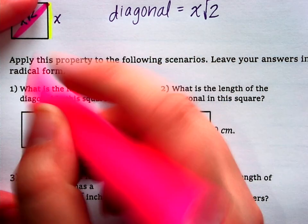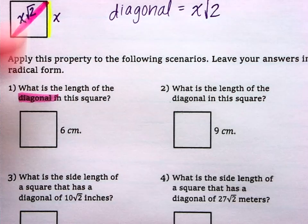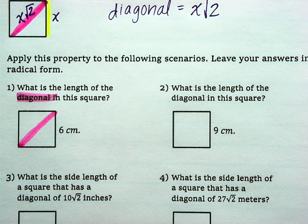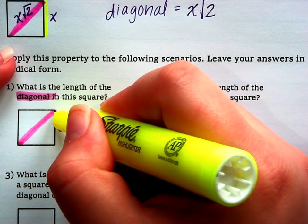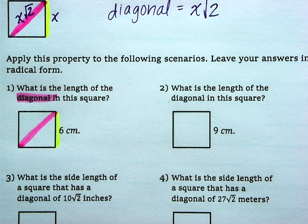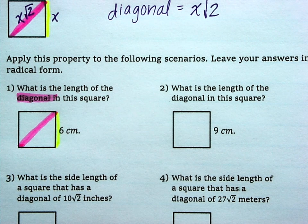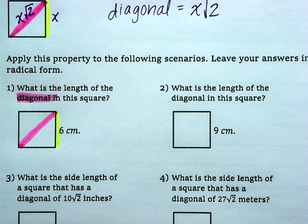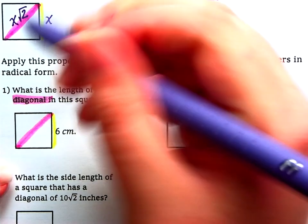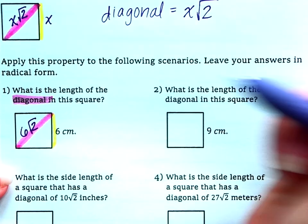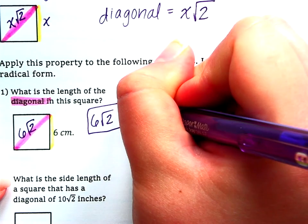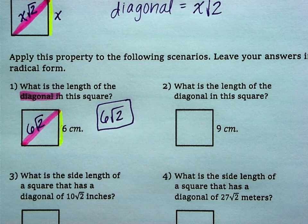Alright, number one. What is the length of the diagonal in this square? So, they want us to find the length of the diagonal, given that the side length is 6. Any guesses? Side length is 6, so what would the diagonal be? Yeah, just multiply by Radical 2. So, whatever the side is, you multiply it by Radical 2. And that's the answer. 6 Radical 2.